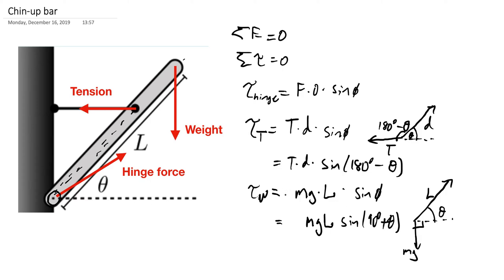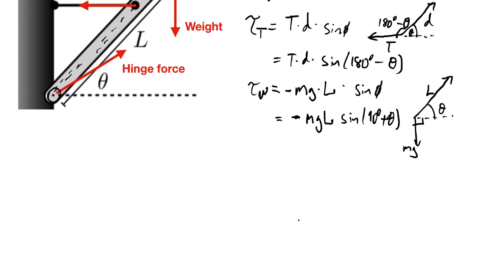The other thing that I've neglected so far is that this is a torque in the clockwise direction. So this is actually a negative torque. So with these two pieces, we can go ahead and solve for the magnitude of the tension force.